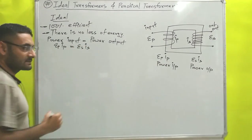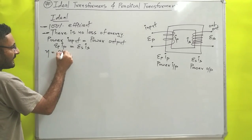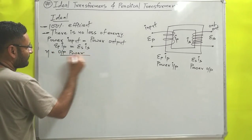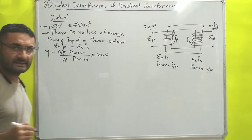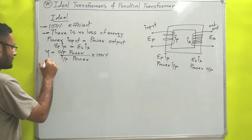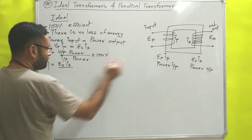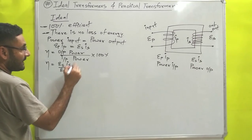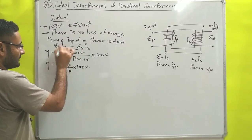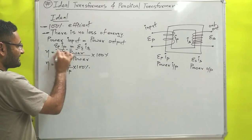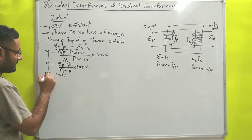Now if we talk about the efficiency of an ideal transformer, the efficiency equation is output power divided by input power, multiplied by 100 to get the answer in percentage. So efficiency equals Es·Is (output power) divided by Ep·Ip (input power), multiplied by 100. Since for the ideal transformer output power equals input power — Es·Is equals Ep·Ip — that term cancels to one, so efficiency equals 100%.